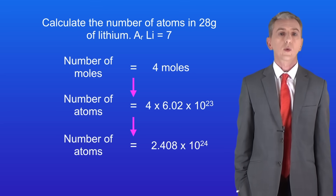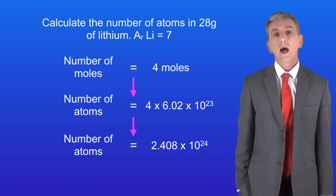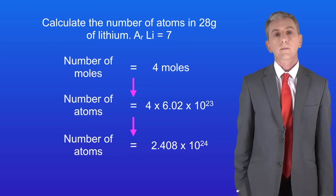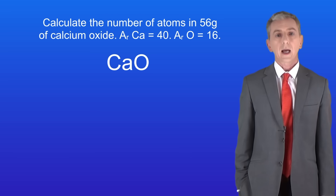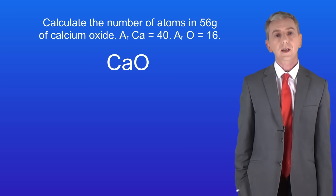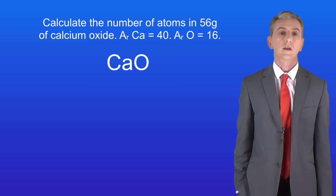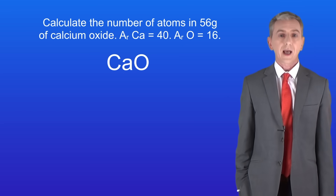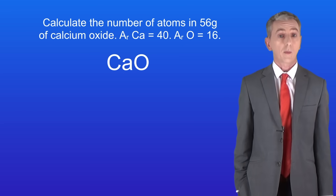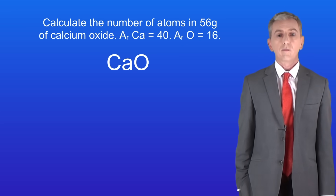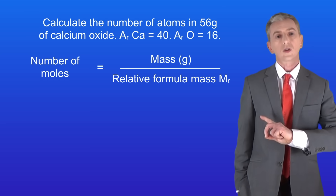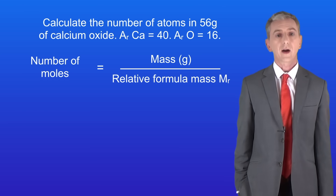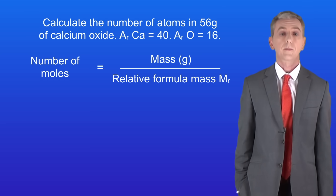Now you could be asked to work out the number of atoms in a compound, and that's also fairly straightforward. Here's a sample question: calculate the number of atoms in 56 grams of calcium oxide, which has the formula CaO. Calcium oxide is a compound, so to calculate the number of moles we use the equation: number of moles equals mass in grams divided by the relative formula mass.